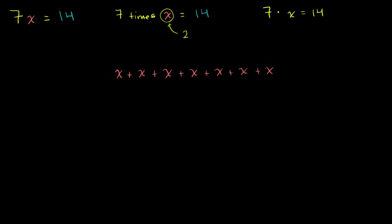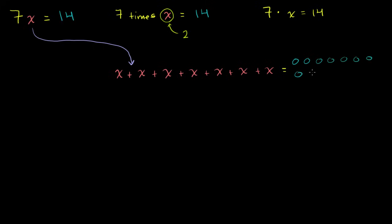This equation tells us that 7x is equal to 14. Let me draw 14 objects here — 1, 2, 3, 4, 5, 6, 7, 8, 9, 10, 11, 12, 13, 14. So we're saying 7x is equal to 14 things. These are equivalent statements.